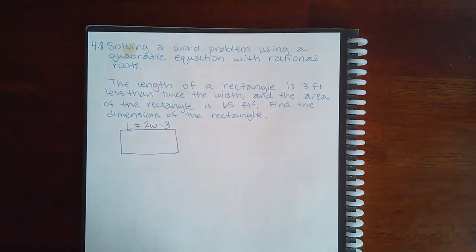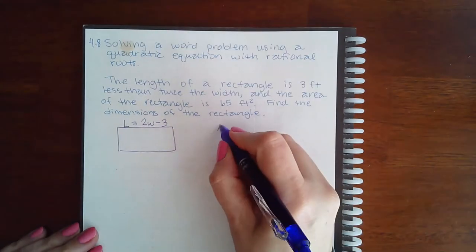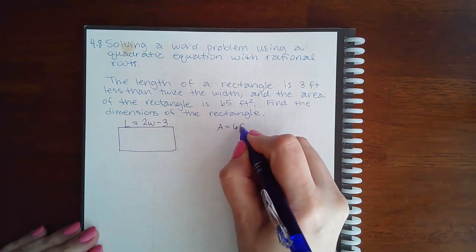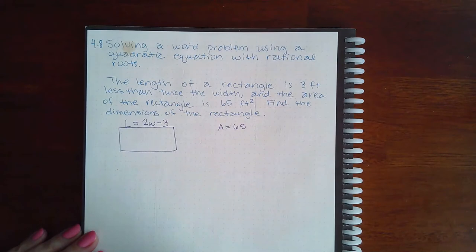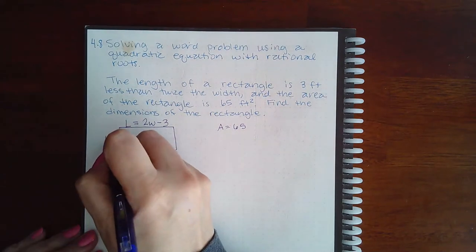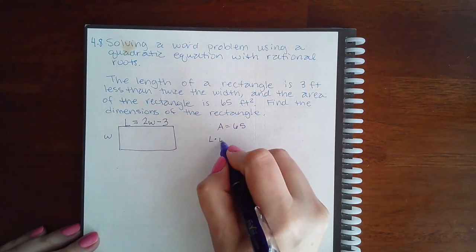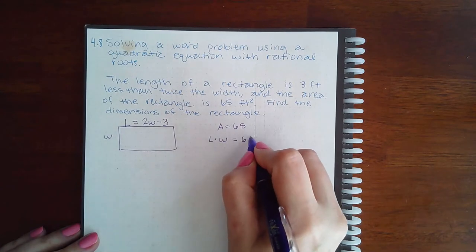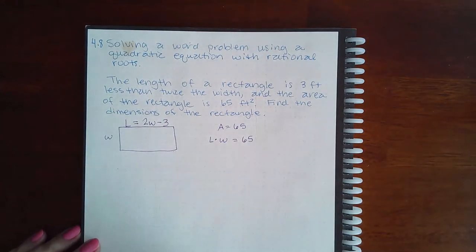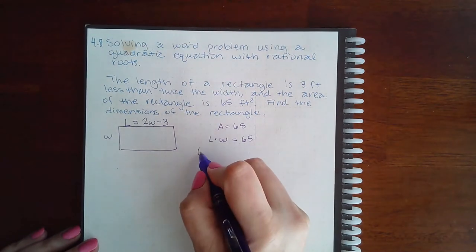Twice the width means two times the width, and the area of the rectangle is 65 feet squared. Find the dimensions of the rectangle. This is the width w. I know that length times width is how we calculate area, and I know that area is equal to 65 square feet. I also know that length is 2w minus 3.